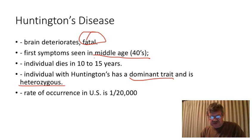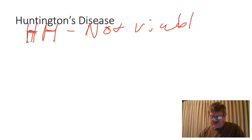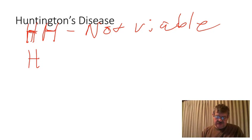The individual with Huntington's disease has a dominant trait and is heterozygous — they have one dominant allele that causes the disease. This individual that is homozygous dominant we will not see as a live birth, so that individual is not viable. That one causes developmental problems such that we will not see it as a live birth.